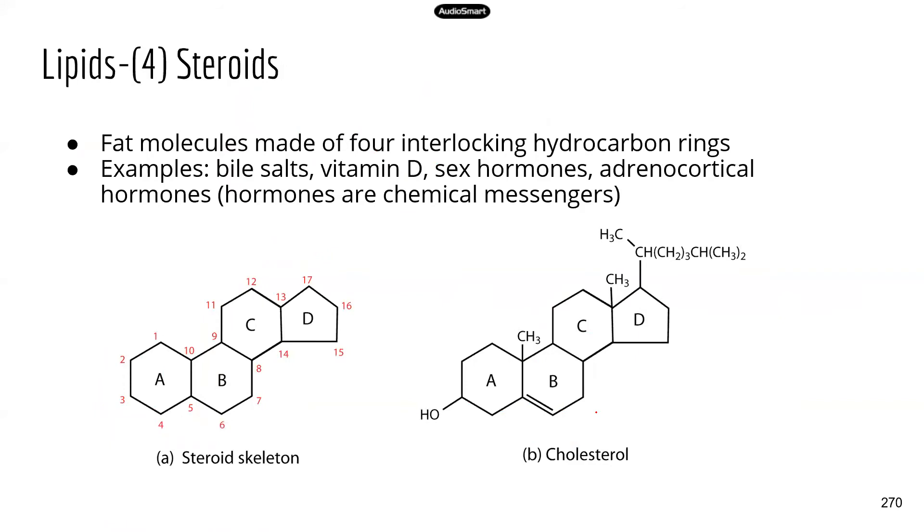Last group of lipids: steroids. Steroids usually have this typical four interlocking hydrocarbon rings. When you look at the structure, there are carbons here, and they're connected with hydrogen. These are hydrocarbon rings. And you can see all the steroids, they have four adjoining rings: one, two, three, four.